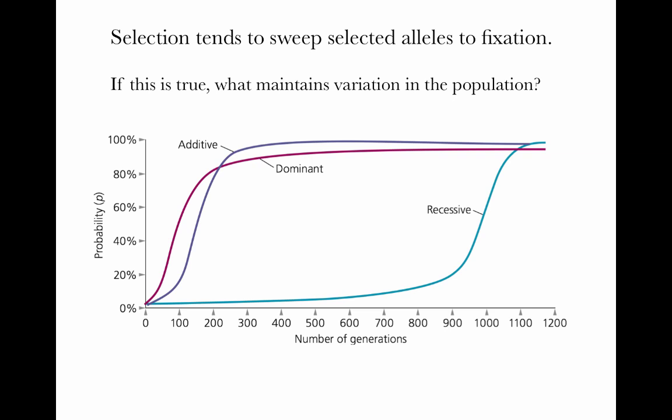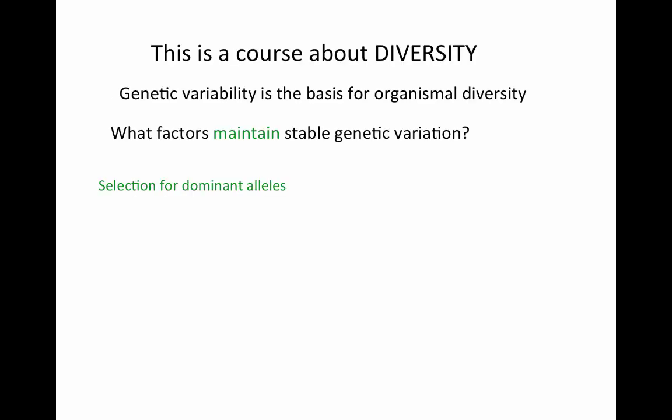Those are two forms of selection that decrease genetic variability. But we also see a mechanism that maintains genetic diversity: selection in favor of a dominant allele. Because both dominant homozygotes and heterozygotes have full fitness advantage, this allele increases very rapidly to a very high frequency but never becomes fully fixed, because the less fit recessive allele can always hide in heterozygotes. This is the first factor on our list that maintains stable genetic variation.